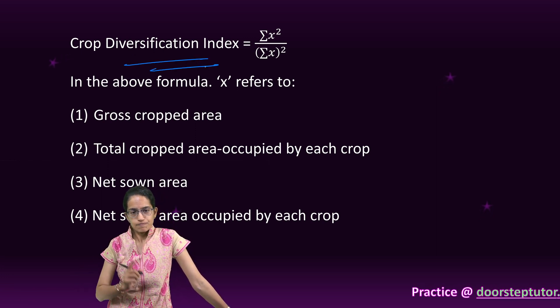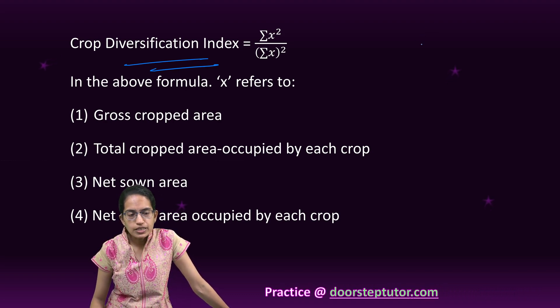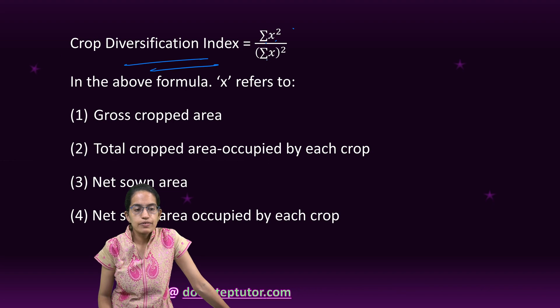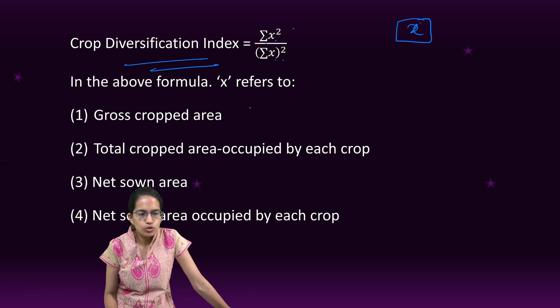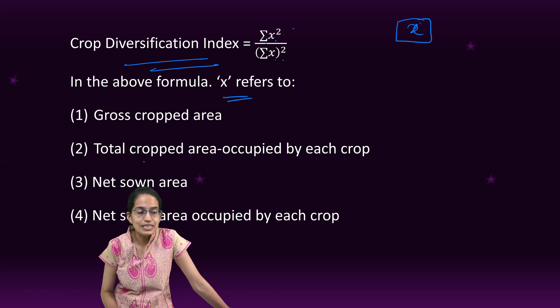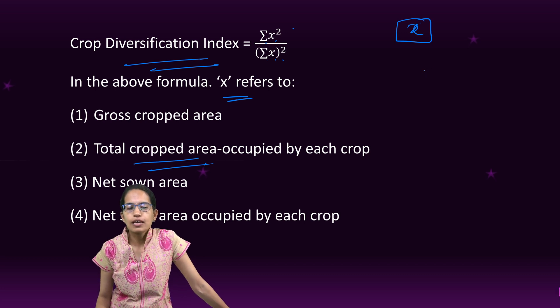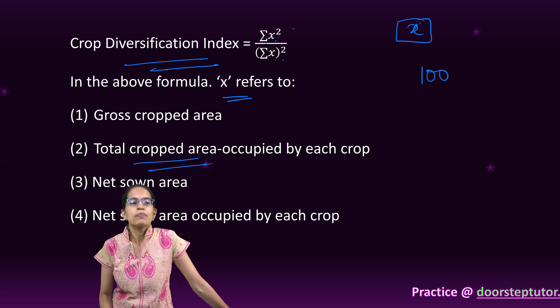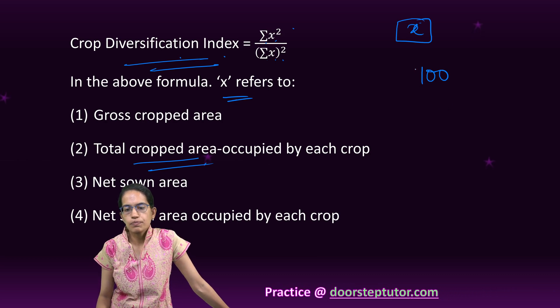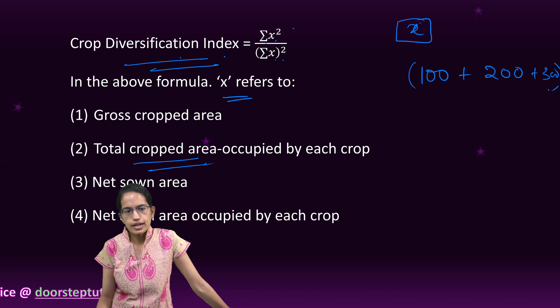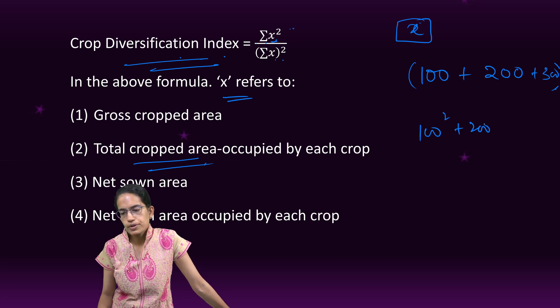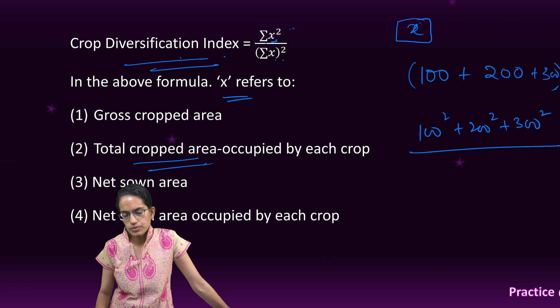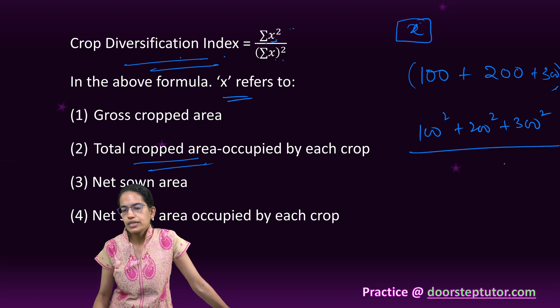Crop Diversification Index: summation of x² divided by (summation x)². There is a difference, right? The question is asking what x is. X is the total cropped area. If I say my total cropped area is 100 hectares, so what would be my crop diversification index? My area, let's say, is 100, 200, 300. So what I do is I take the summation of x squares - that is 100² plus 200² plus 300² in the numerator.